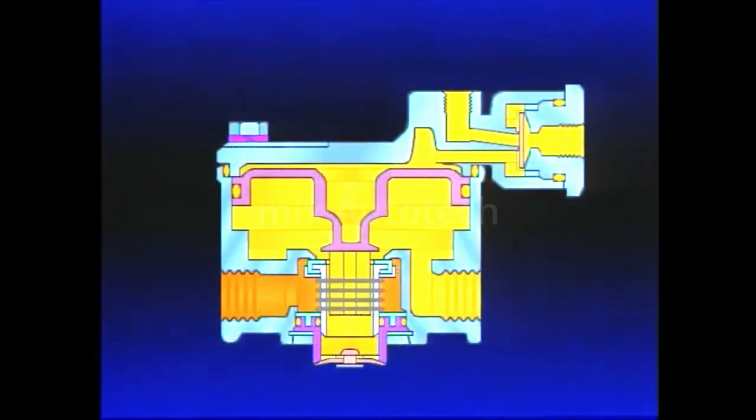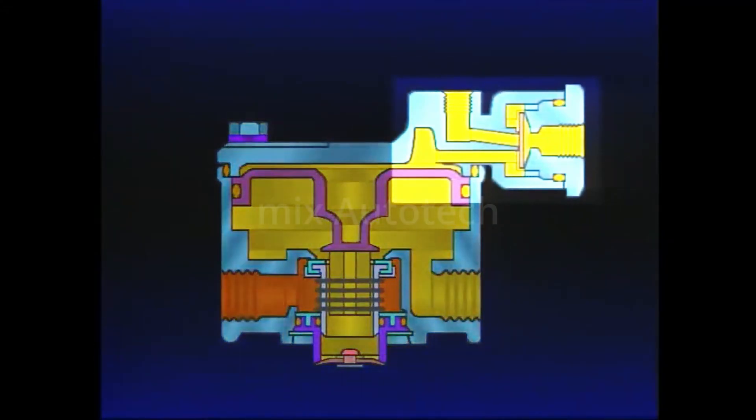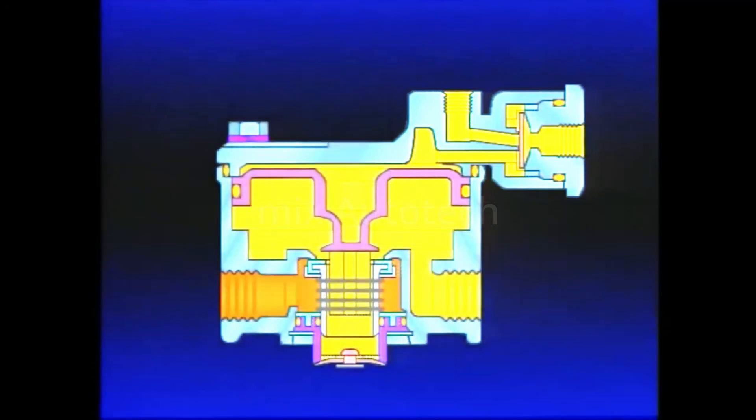The R14 has an additional anti-compounding feature built in. The components for the anti-compounding feature are contained in the cover and consist of a diaphragm and balance port.